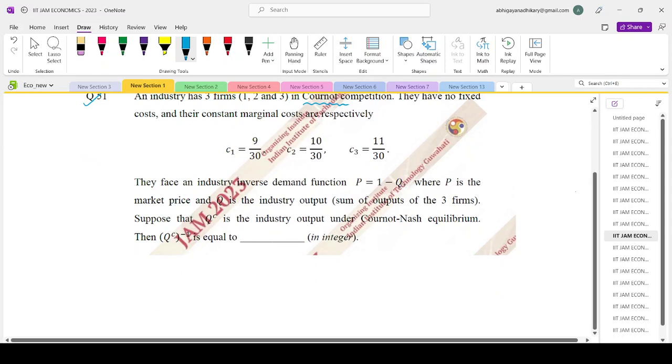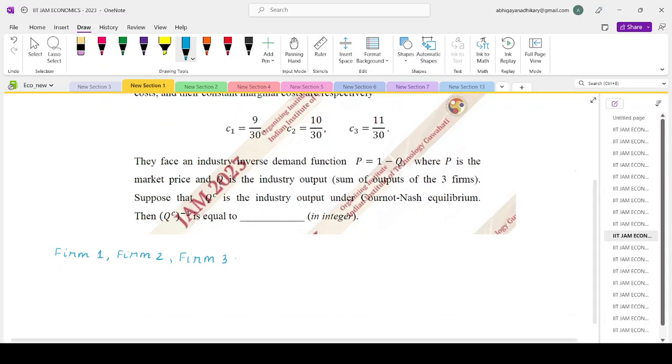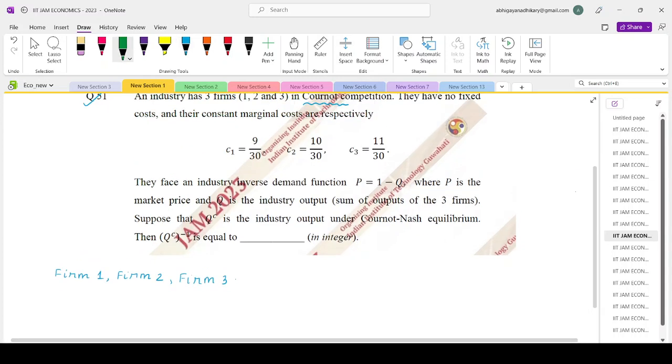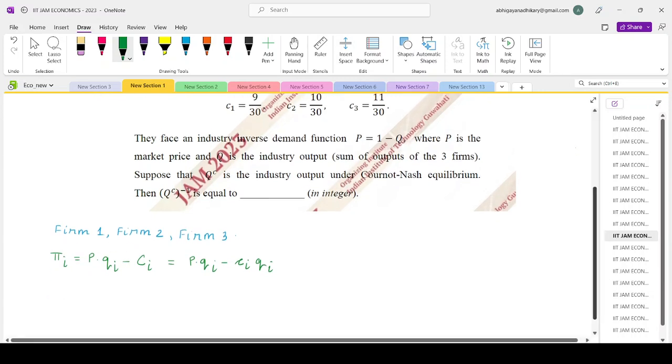Essentially there are three firms. The three firms will be deciding on their optimal output by their profit maximization exercise. In general, the profit function for the i-th firm would be P times QI minus capital CI, the total cost. And since there is no fixed cost and the marginal costs are constant, this will be written as P times QI minus small CI times QI. And they will be maximizing this expression with respect to QI.